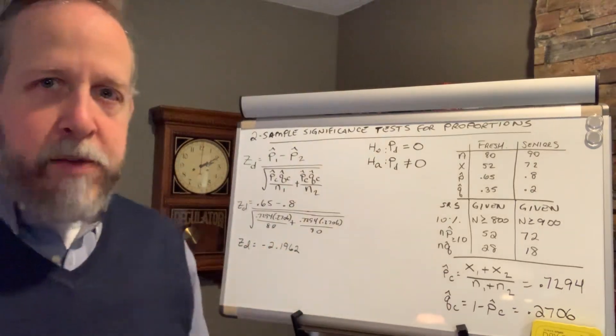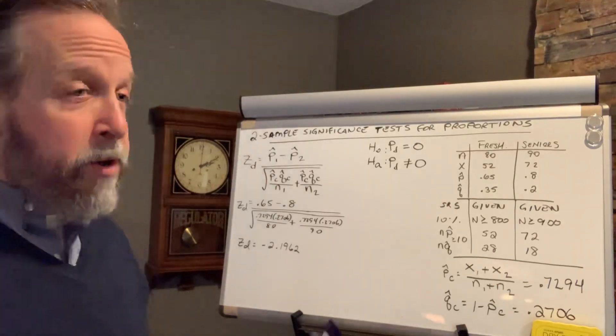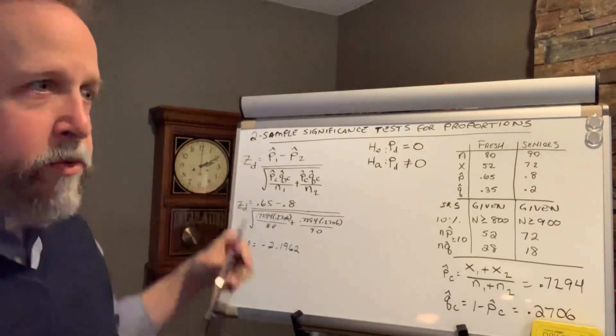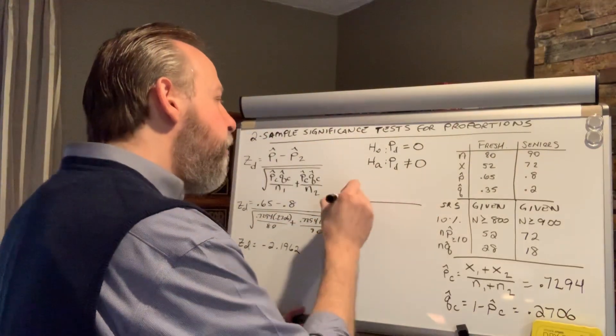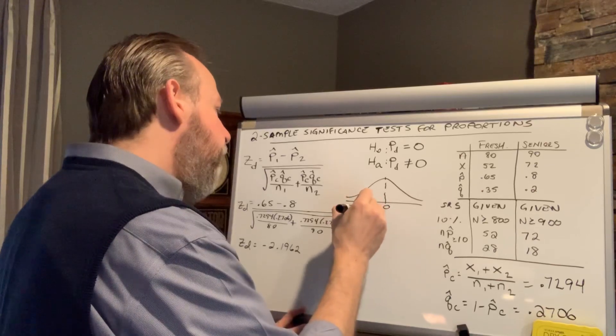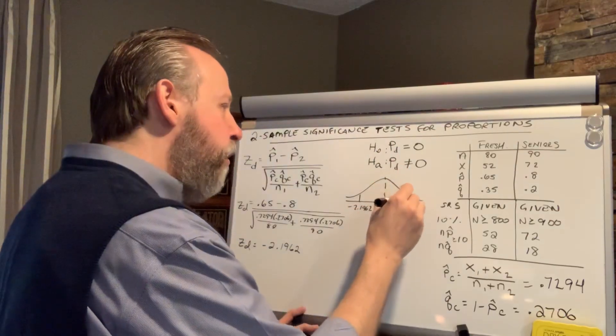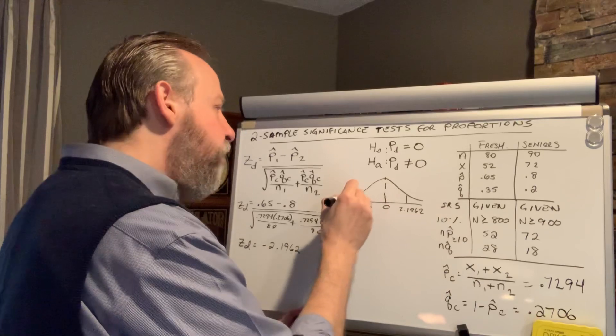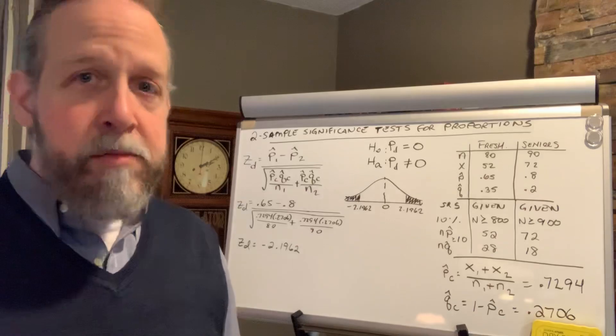Negative z-score. We already understood we're going to get a negative value, because we already knew from the previous prompt that we had a negative confidence interval, but it's okay. Our numerator showed a negative difference. If I were to draw a sketch, which is always a good plan, I'm going to put 0 down here, negative 2.1962 here. It was a two-tailed test, so I'm also going to put positive 2.1962 and shade in both directions. Two-tailed test has two tails.